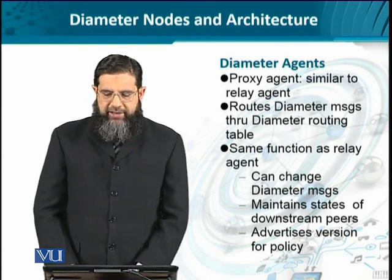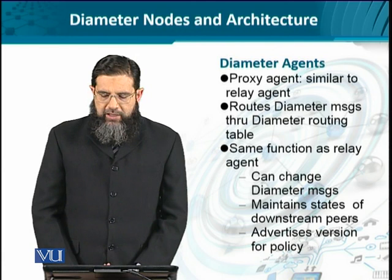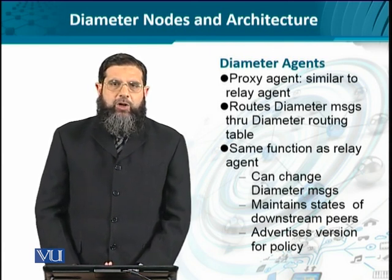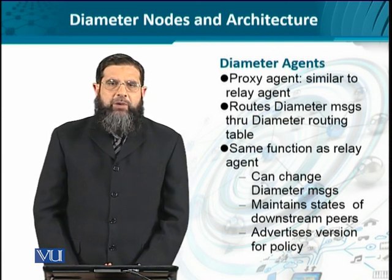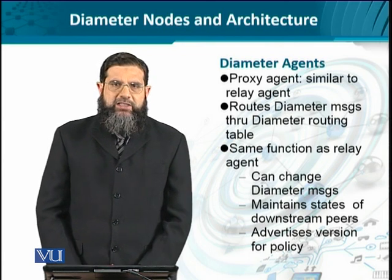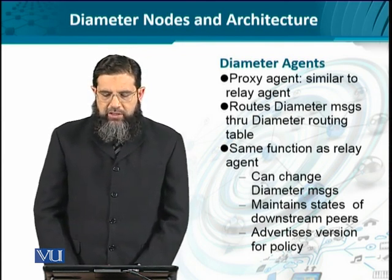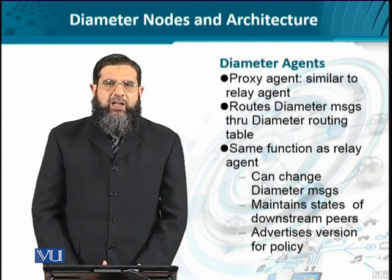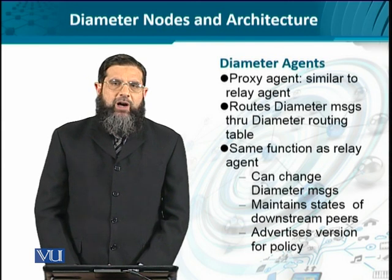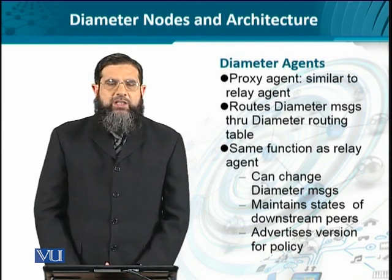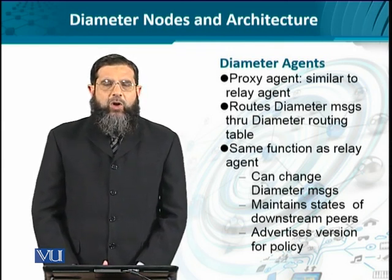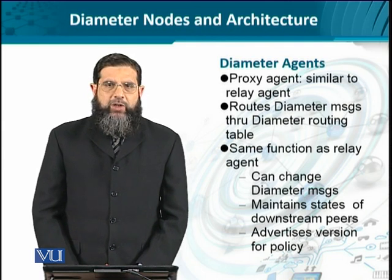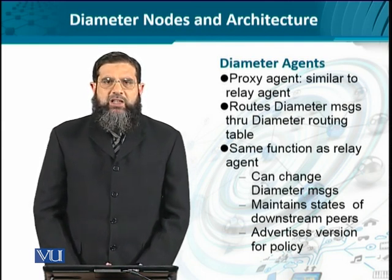The key difference with proxy agents is that the proxy agent can alter the Diameter message contents. Depending on whether it is working on behalf of the client or the server, it can change the contents of the message, such as appending its own ID. While doing so, it also maintains state of its downstream peers — that is, it keeps a log of which clients are making specific requests. Similar to the relay agent, it also advertises its own version and ID, since policy needs to be enforced for a certain Diameter protocol.